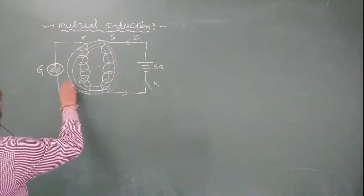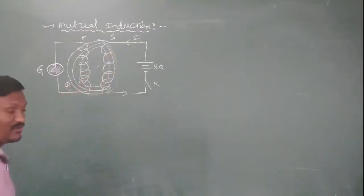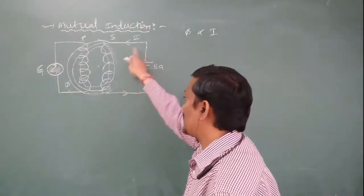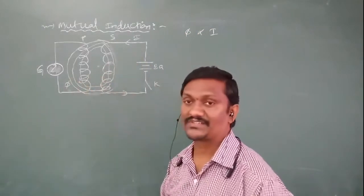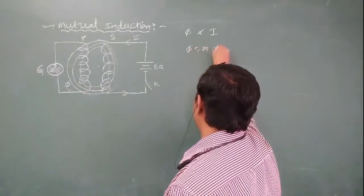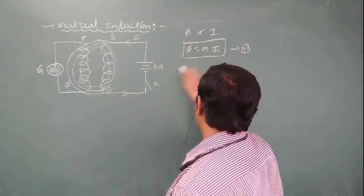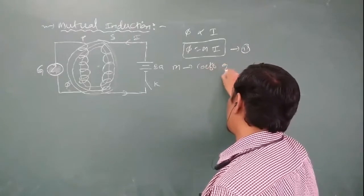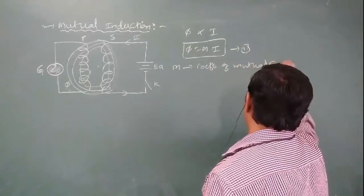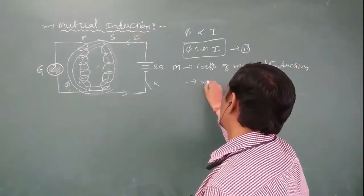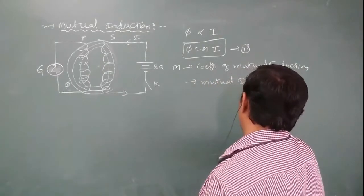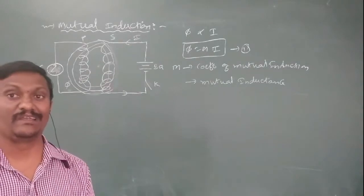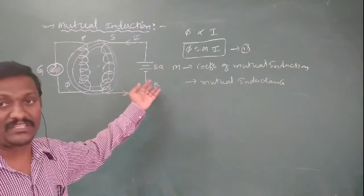According to the diagram, the flux linked into the primary coil depends on the current passing through the secondary coil. The flux in the primary coil is directly proportional to the current in the second coil: more current means more flux, and less current means less flux. Introducing a proportionality constant M, the equation becomes phi1 proportional to I2, where M is called the proportionality constant. This constant in mutual induction is called the coefficient of mutual induction, also known as mutual inductance.